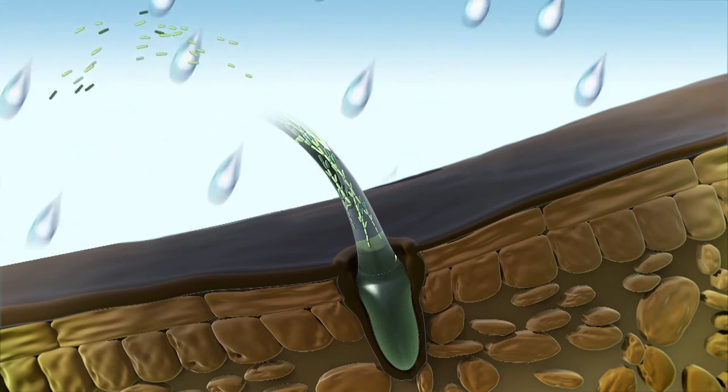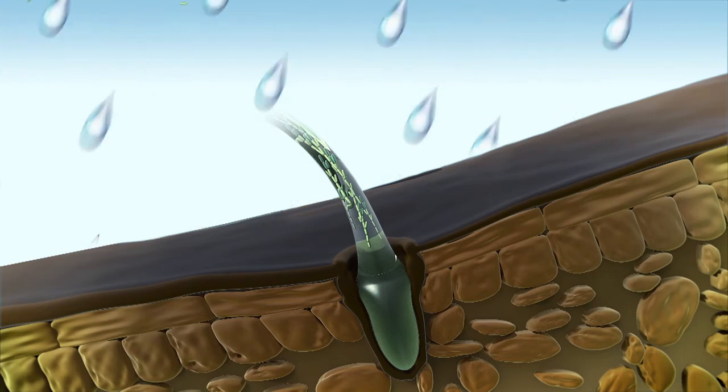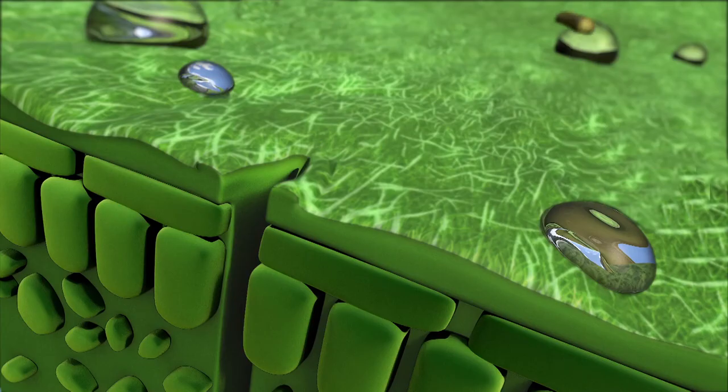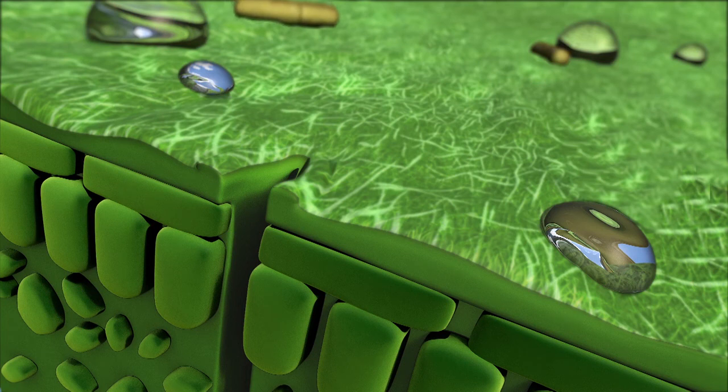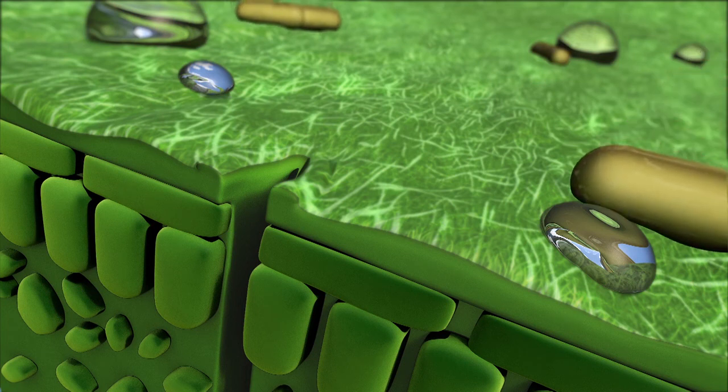The spores carried in the rain are then splashed onto other leaves and surrounding crops, while others move freely in the atmosphere and thus the disease cycle begins again.